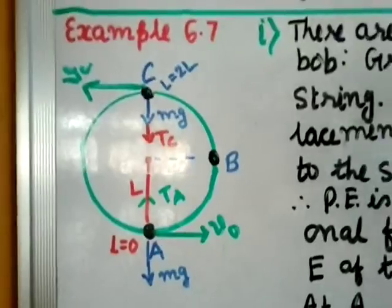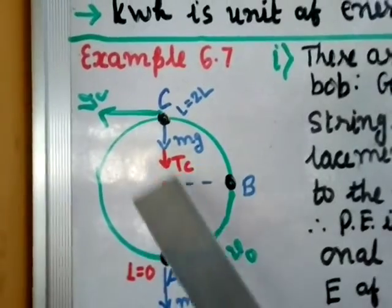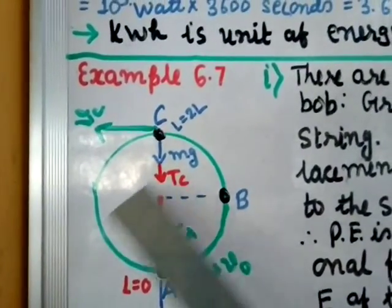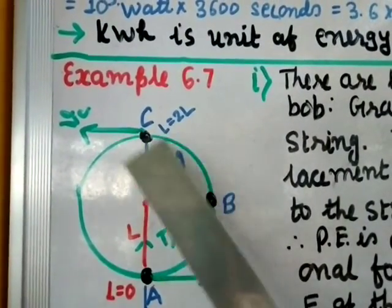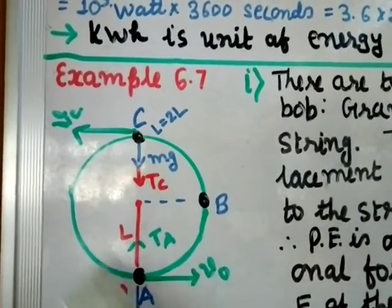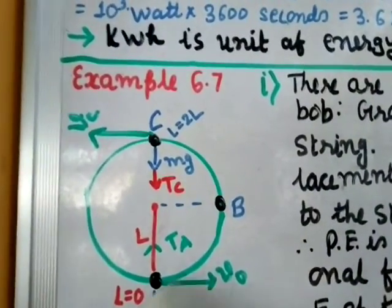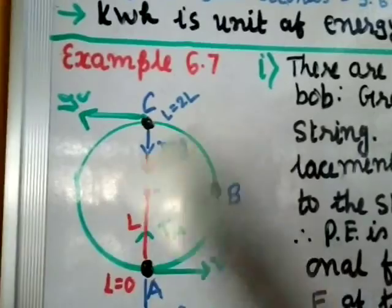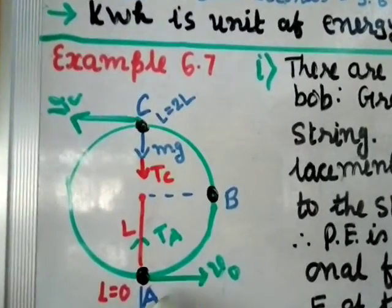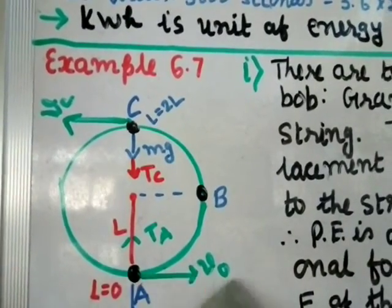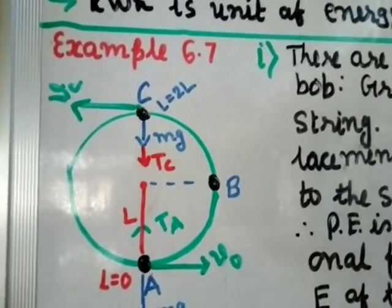The figure shows the lowest point A, highest point C, and point B. The string has length L with the bob. At point A the velocity is v₀, at C the velocity is v_C, and at B the velocity v_B is directed upward, tangential to the circular path. At point C, weight mg acts downward and tension T_C also acts downward.